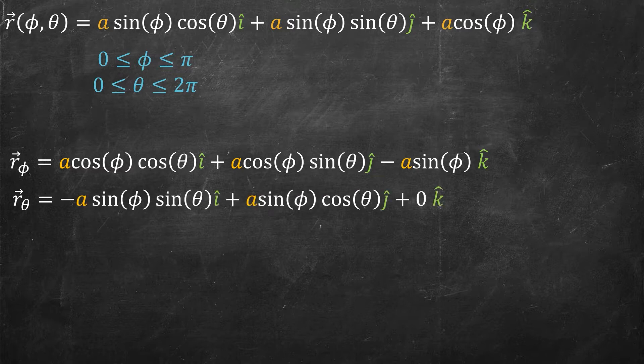I'll do the exact same thing for θ, so now I'm leaving anything to do with φ fixed. I'm taking the derivative of cosine and getting negative sine, the derivative of sine and getting cosine. And then for the k̂ term where there is no θ, the derivative of a cos(φ) with respect to θ is just zero.